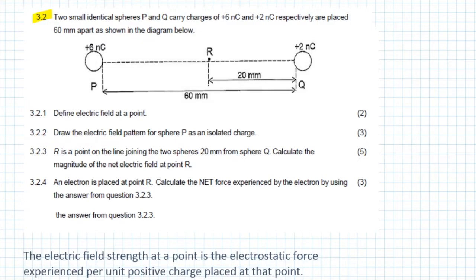This question says: two small identical spheres, P and Q, carry charges of positive 6 nanocoulombs and positive 2 nanocoulombs respectively, and are placed 60 millimetres apart as shown in the diagram. In the same diagram, we can also see a 20 millimetres between Q and a point in space called R.